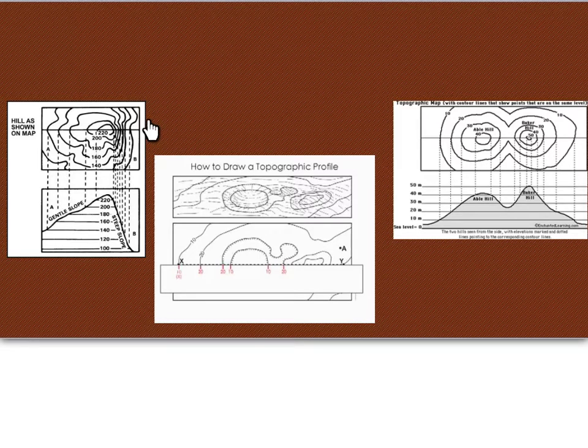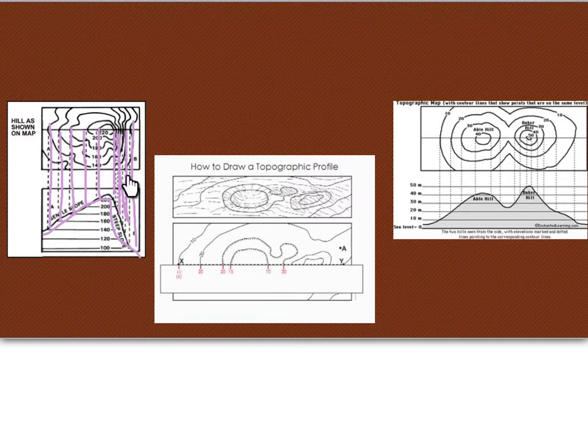So what you would do after you get your line drawn is every time your line comes in contact with the contour line, you bring it down and make a point on your graph below, and it will turn out and give you exactly what it looks like from the side. Now it's very important that you space these out appropriately because you see how close these ones are together? If you just plotted them an even distance, you would never know that this side is super steep, so you need to make sure to do that.